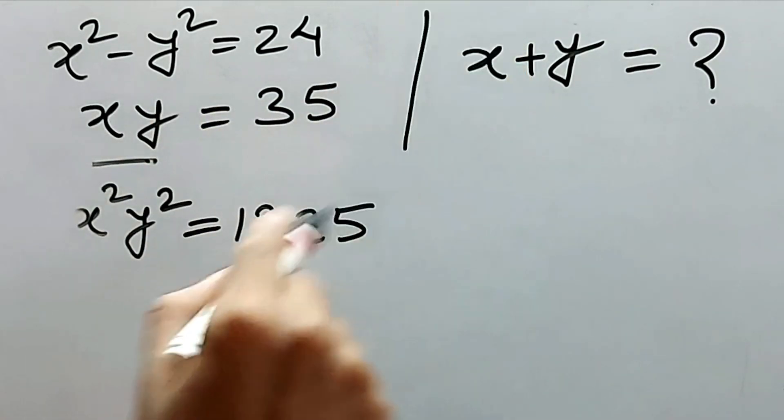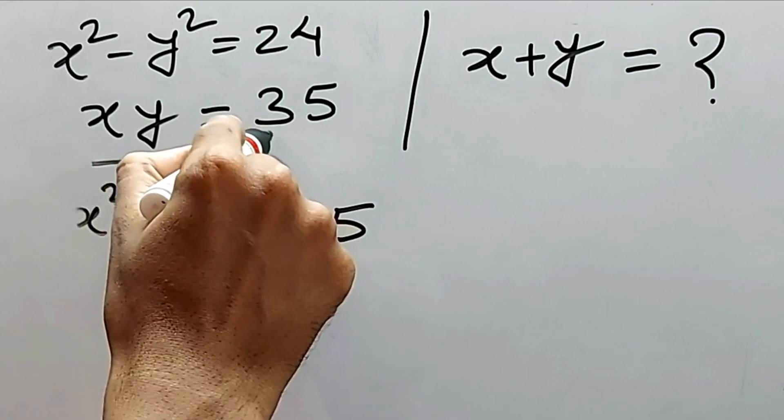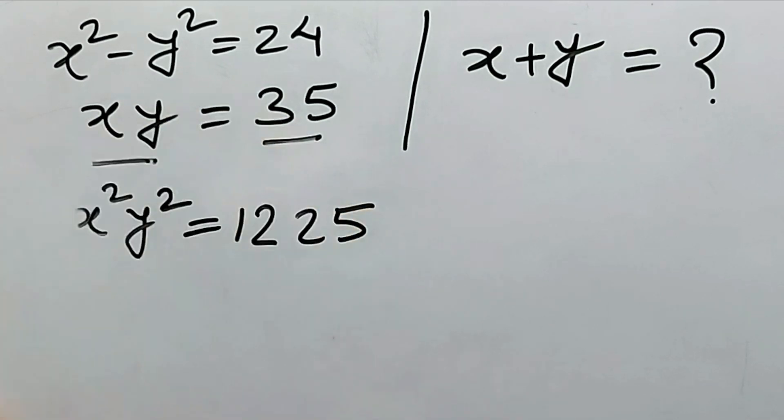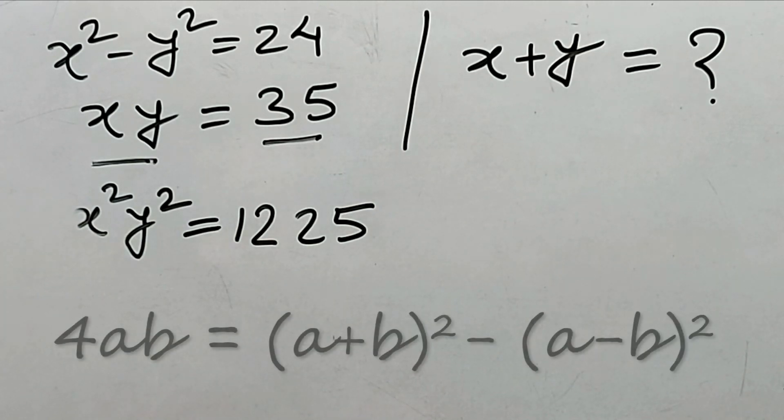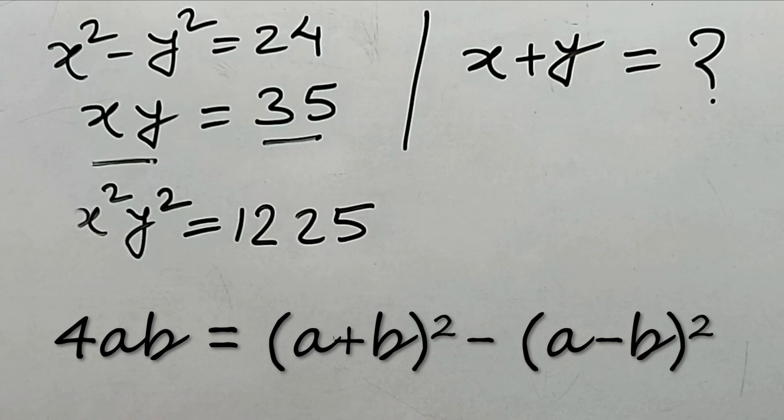See it in the I button, how to multiply, how to get square of this type of number. Okay. Do you know 4ab, the formula of 4ab? 4ab is equal to a plus b whole square minus a minus b whole square.